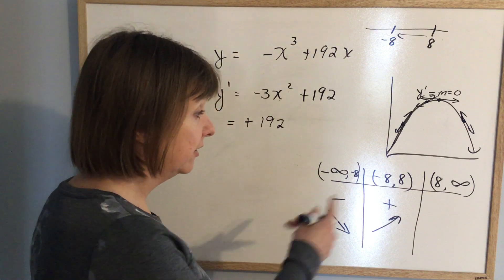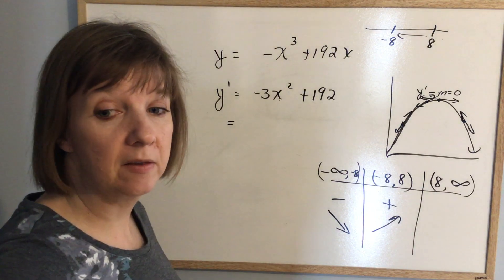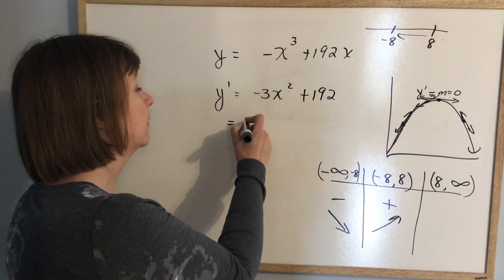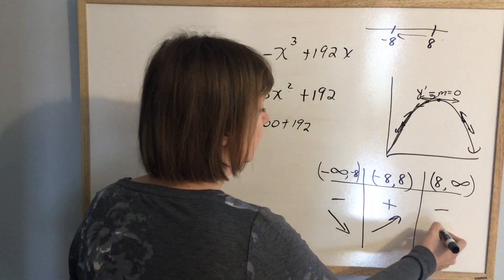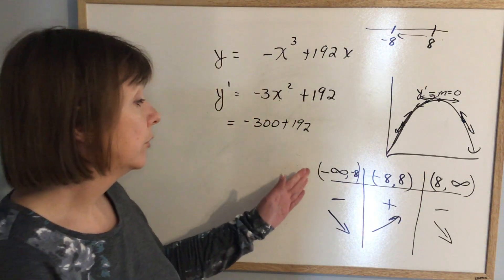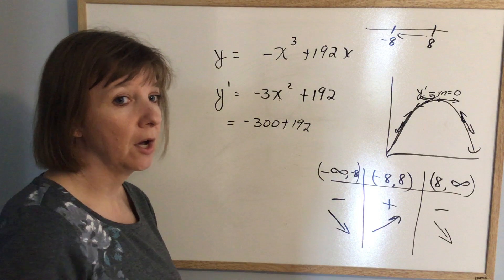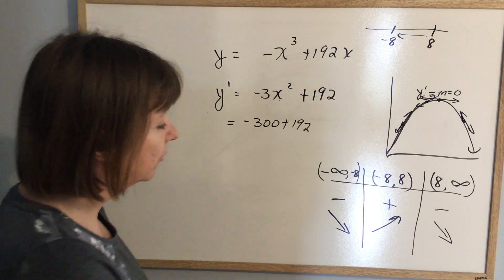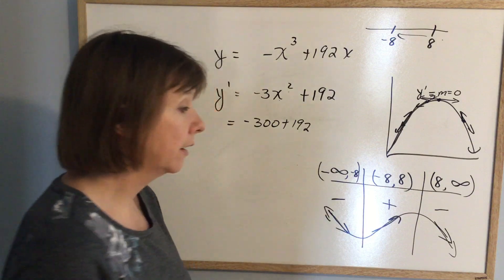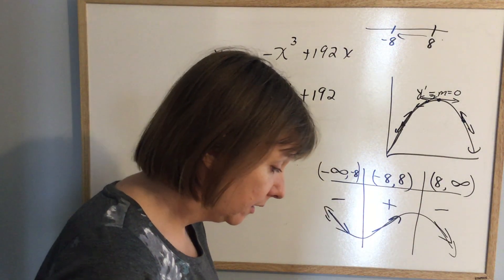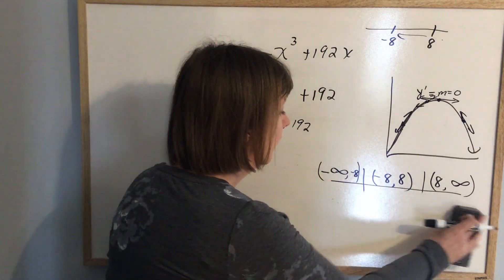For 8 to infinity, I'll pick 10. Ten squared is 100, times negative 3 is negative 300, plus 192 — that's negative, so it's decreasing. So: from negative infinity to negative 8, the graph goes down; from negative 8 to 8, the graph goes up; from 8 to infinity, the graph goes down. That actually gives you a little picture of what the graph would look like. That's all we do.